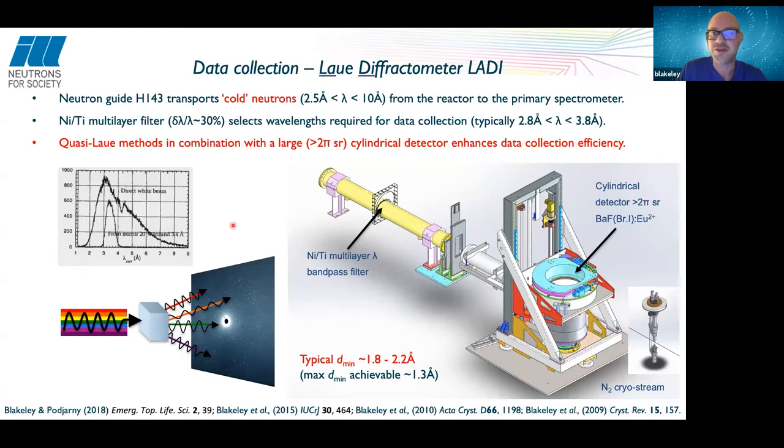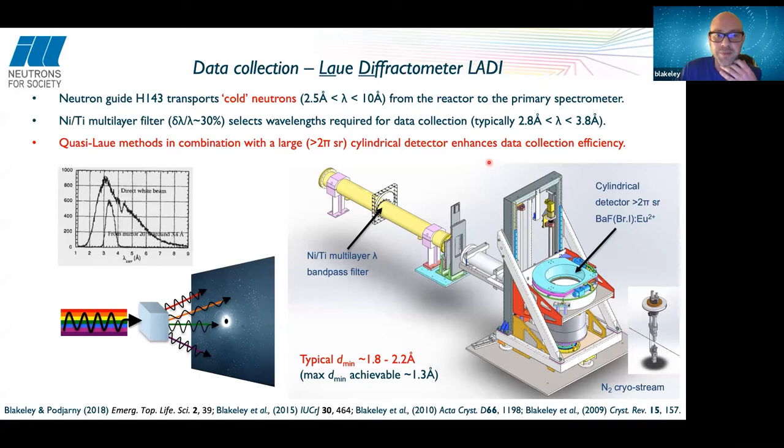We typically use neutron wavelengths of around 3 to 4 Ångströms, with a detector that fully encircles the sample — it sits at the center of a cylindrical detector, giving large coverage of reciprocal space greater than 2π steradians. The combination of the Laue method with the cylindrical detector enhances data collection efficiency so that we can collect data more quickly.